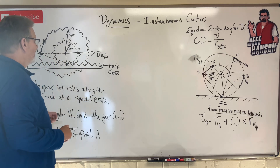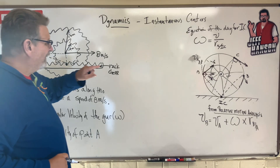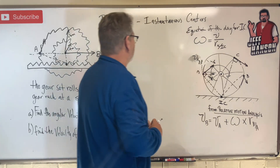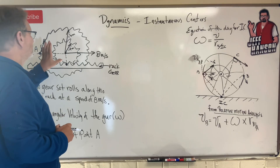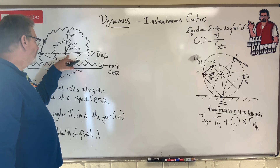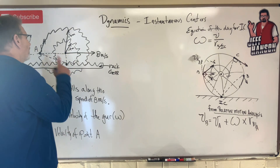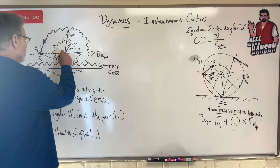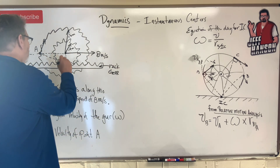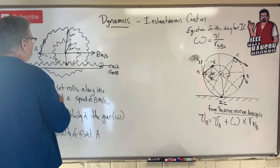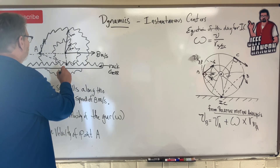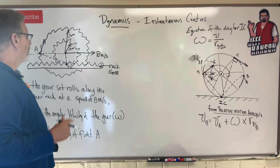There's my instantaneous center. The way this works is v over the instantaneous center equals omega. For the little gear - we know the diameter, and the center point right here is the one moving at eight meters per second. That middle point also has an instantaneous center: draw perpendicular lines from the velocity vectors, and where those two velocity lines intersect is always the instantaneous center.